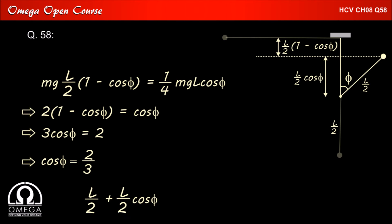Now the height of the bob from its lowest position is L by 2 plus L by 2 cos phi, which is equal to L by 2 plus L by 2 times 2 by 3 which is equal to 5L by 6. This is our answer.